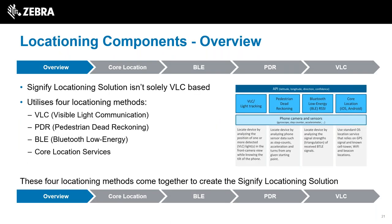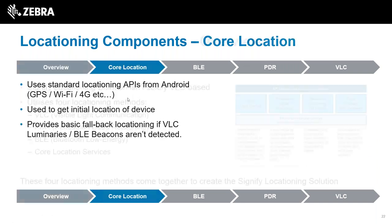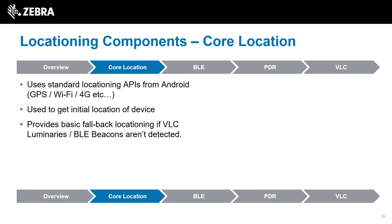It's not just VLC that provides the location in this library - it uses a combination of four different location methods to make it more robust and to allow it to function when VLC isn't available, such as when it's in your pocket. The four methods are: VLC, pedestrian dead reckoning, Bluetooth Low Energy, and the core location services which includes GPS. The core location uses GPS, Wi-Fi or 4G - for the PS20 which doesn't have cellular, that would be Wi-Fi - and it's used to get the initial location, acting as a fallback if none of the other methods are available.